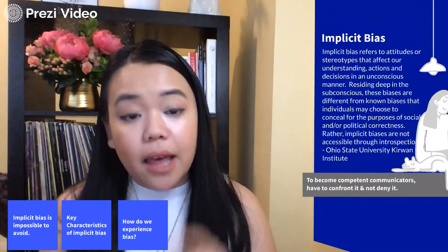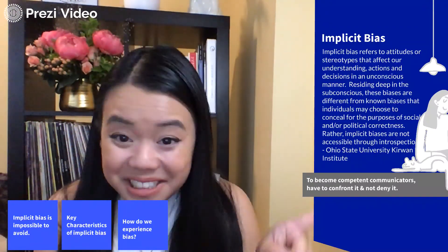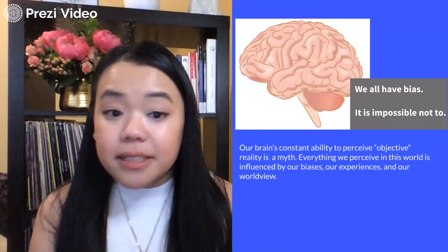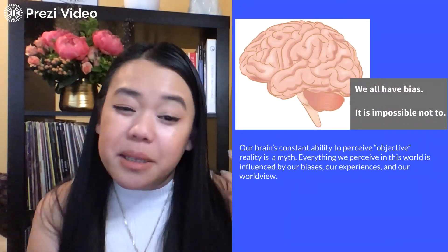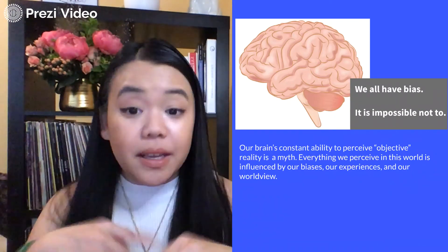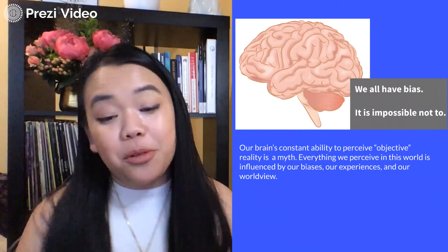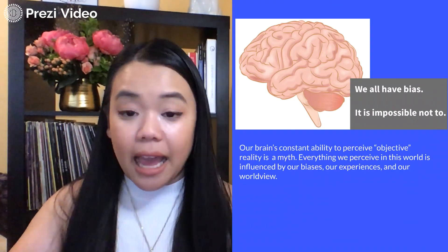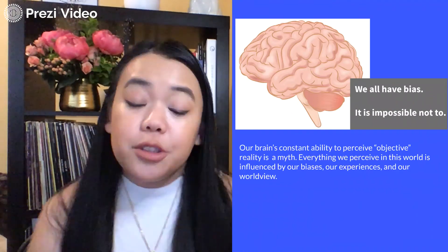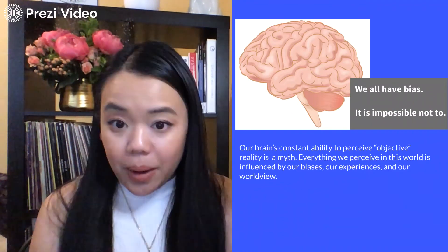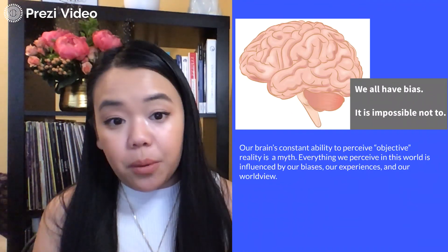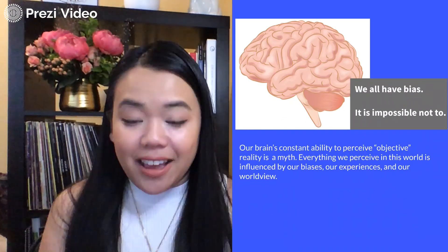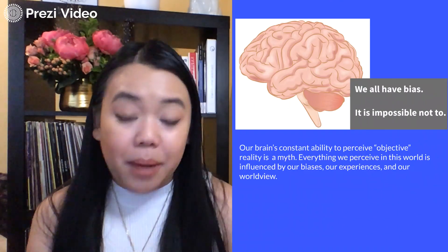The reason implicit bias is important is that it's impossible to avoid. It's impossible to avoid bias because our brain's ability to perceive anything objective is a myth. We're human beings — we're already subjective creatures. There's no way we could view our reality as objective all the time. So everything in your brain, everything you use to perceive the world — which we'll get more to in chapter 4, so bookmark this idea — is influenced by our past experiences.